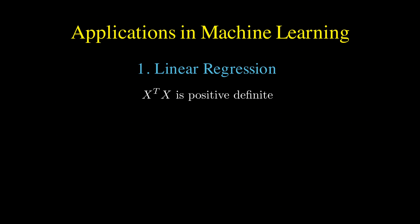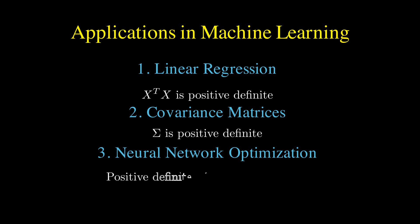In machine learning, positive definite matrices show up everywhere. In linear regression, the matrix x transpose x, where x is our data matrix, is positive definite under reasonable conditions, which guarantees that the normal equations have a unique solution. In statistics and probability models, covariance matrices are positive definite by construction, ensuring that they represent valid probability distributions. And in neural network training, when the Hessian of the loss function is positive definite near a critical point, we know that this point is a local minimum and training can converge in a stable way.